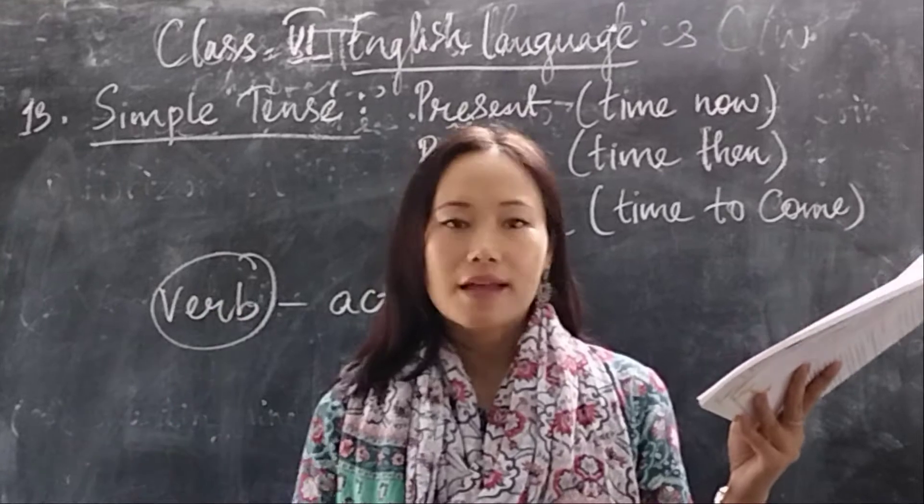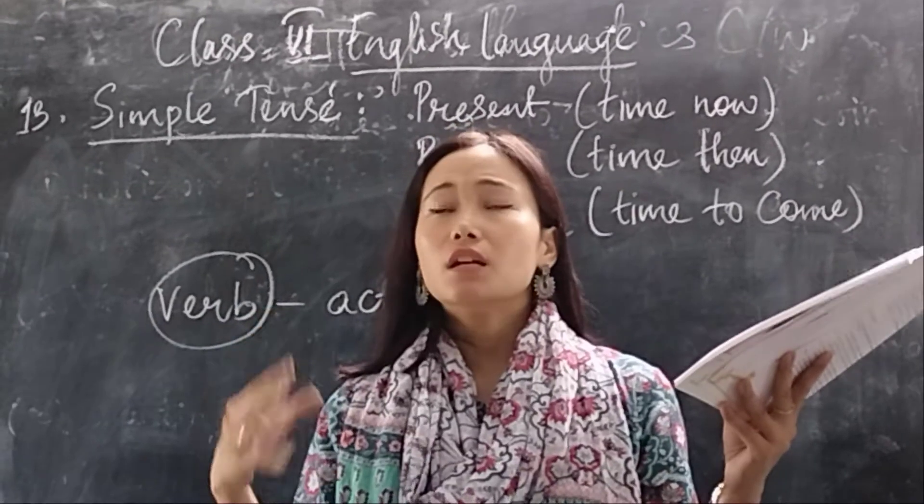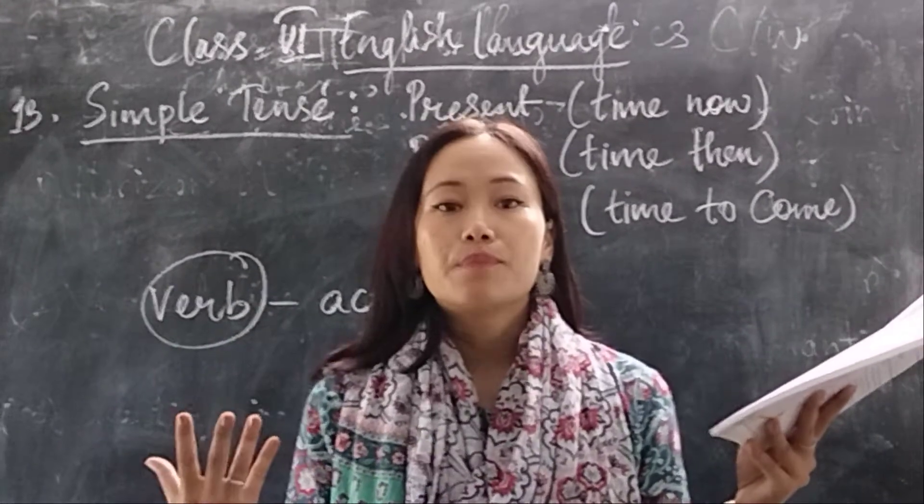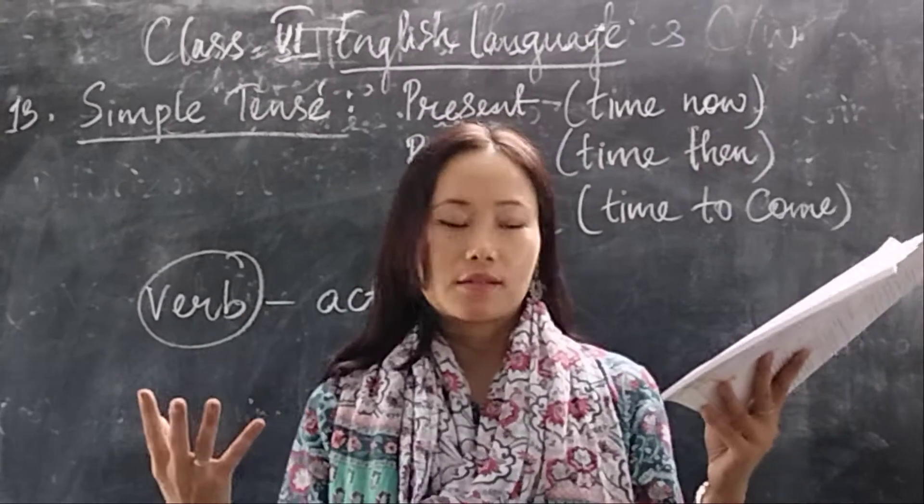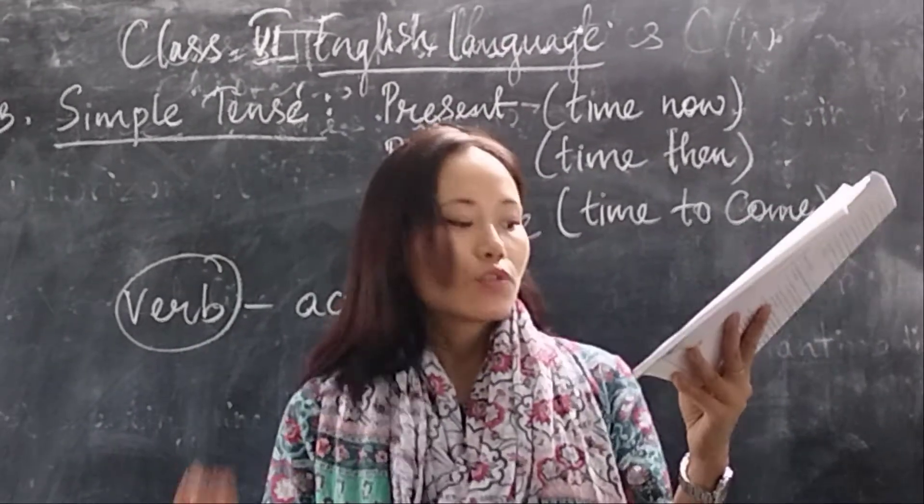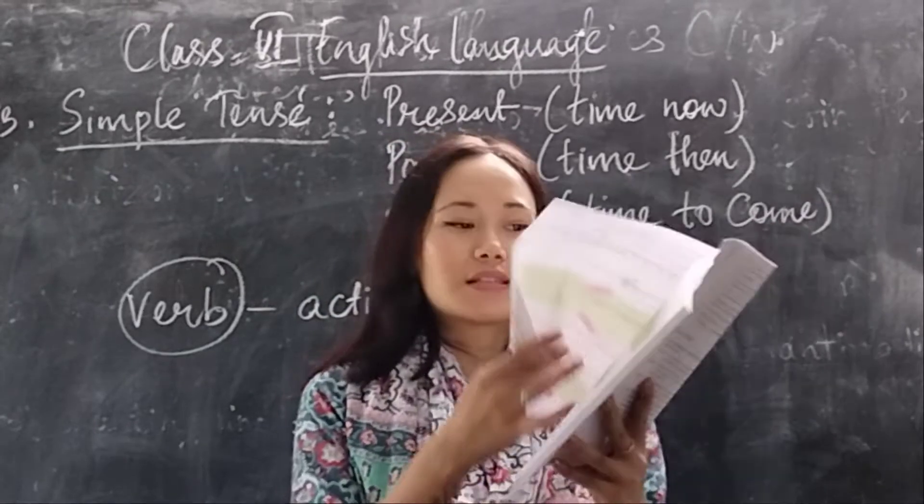For example, the moon is round. We know that it's a universal fact. Or, they are floating around the sun. That is something that's a fact, a general truth. So, then we use simple present tense.